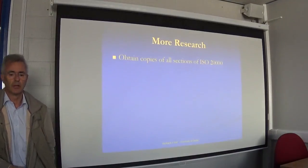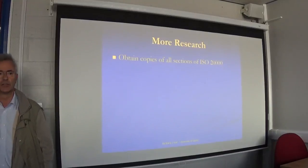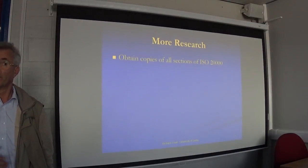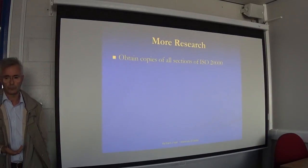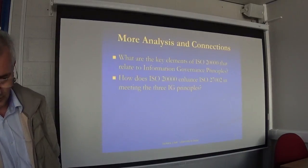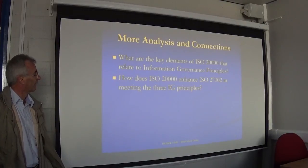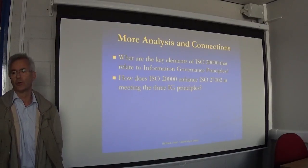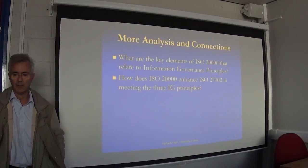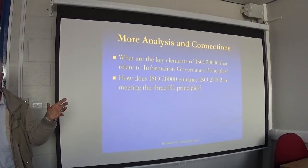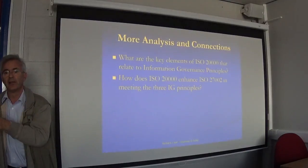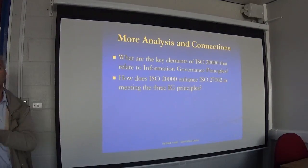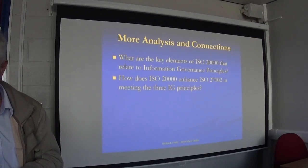Then move on to ISO 20000 itself — another standard which is quite interesting. You'll have to find it and learn about what it does, what it's talking about; look at the introduction, look at the preface, find sources that refer to what ISO 20000 is all about. Ask yourselves: which bits of 20000 relate to information governance principles, and in what way does 20000 enhance 27002? You're looking at a set across all of the ISO standards which actually interact — some will help you understand how to do better than just the basics.